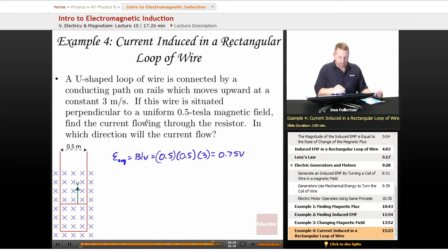Now, if that's situated here, we're trying to find the current flowing. This must have some resistance in that loop R. Well, I is going to be V over R, where our induced voltage is just going to be this 0.75 volts over whatever R happens to be for that circuit.